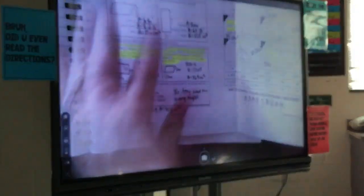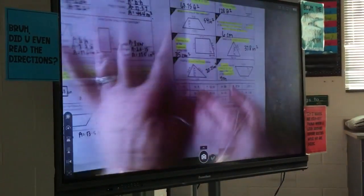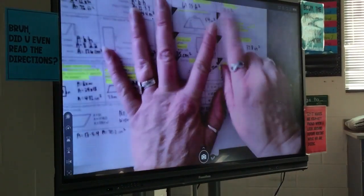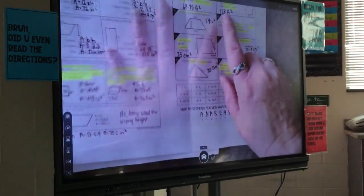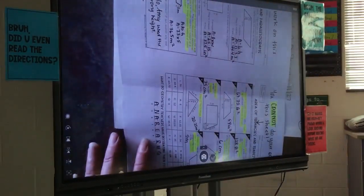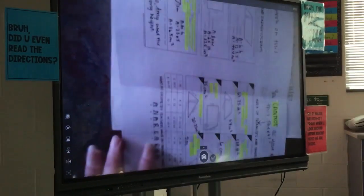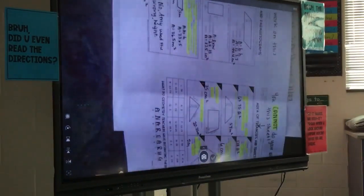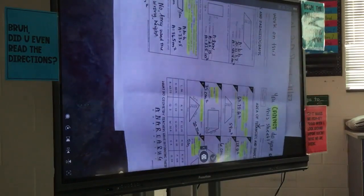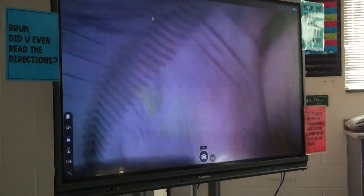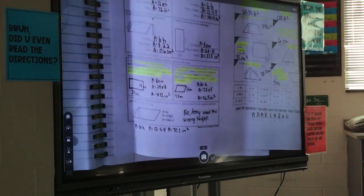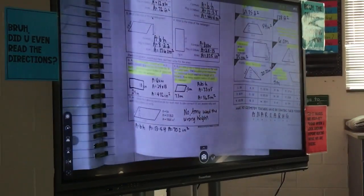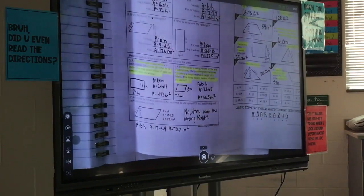Number five says find the area of the trapezoid at the right by decomposing. So can you turn your paper this way? Turning the paper this way shows you that your parallel lines are always your bases. So on a trapezoid, no matter what shape the trapezoid is in, you're finding those two parallel lines and those are your bases.